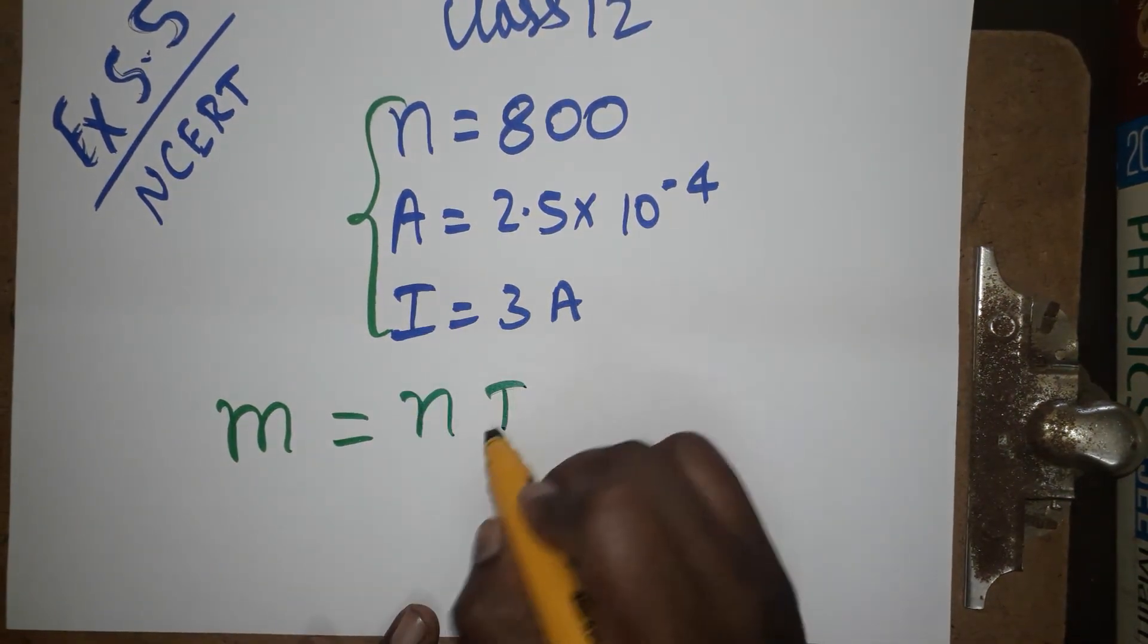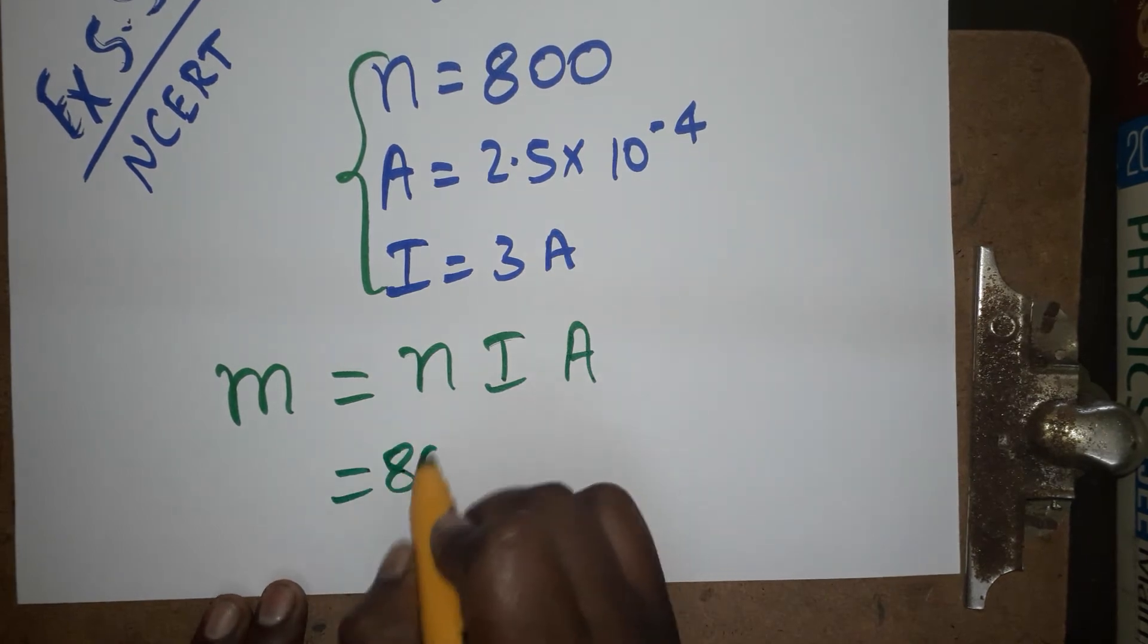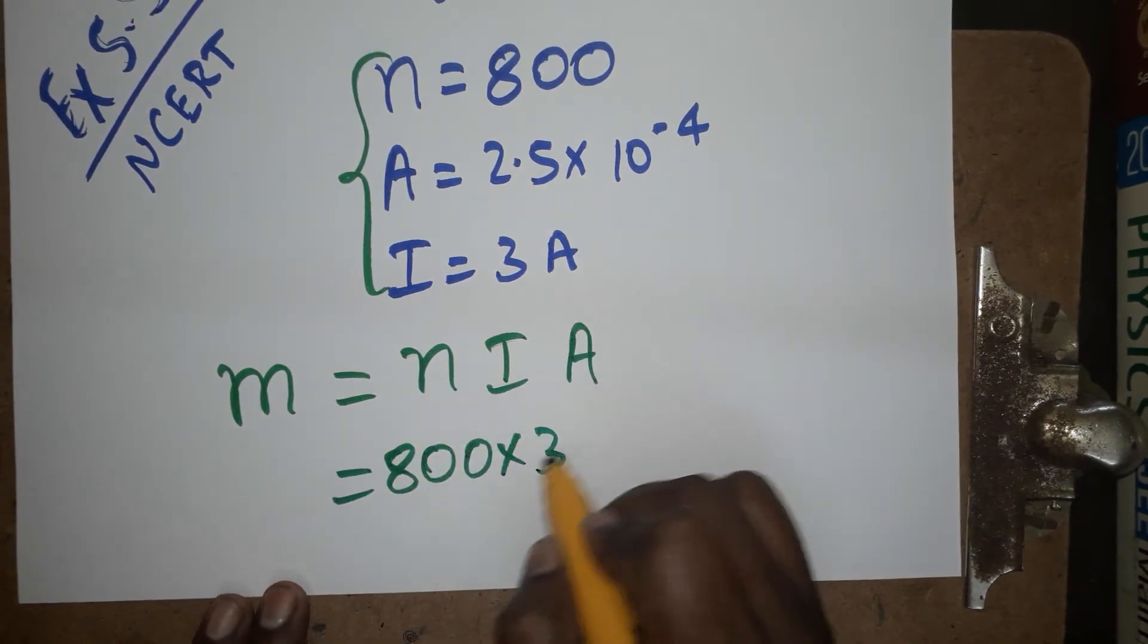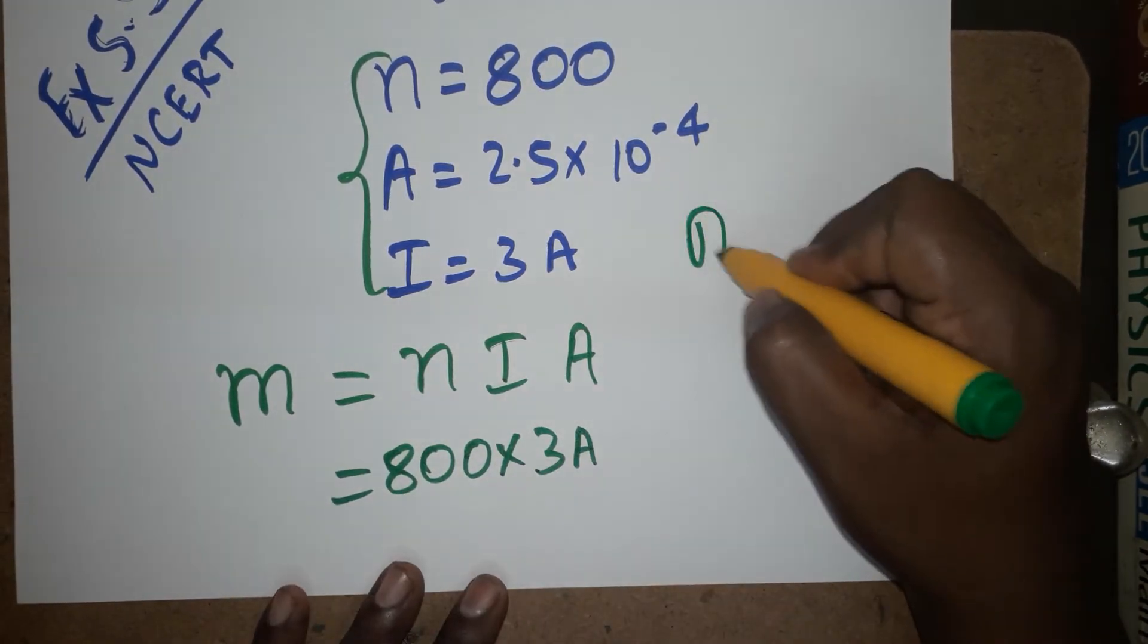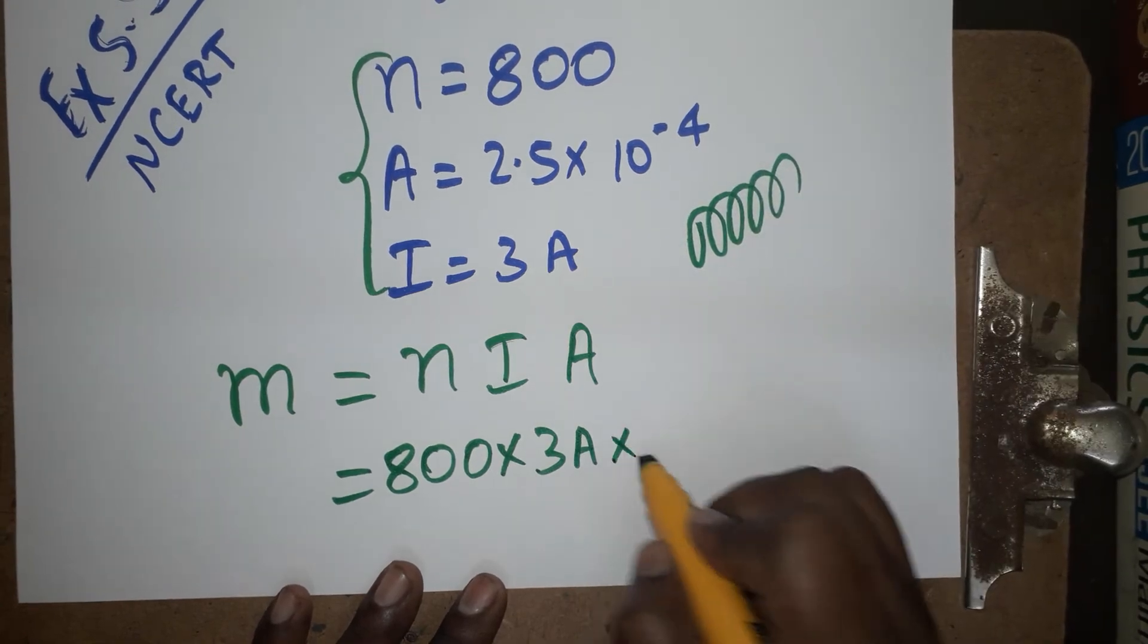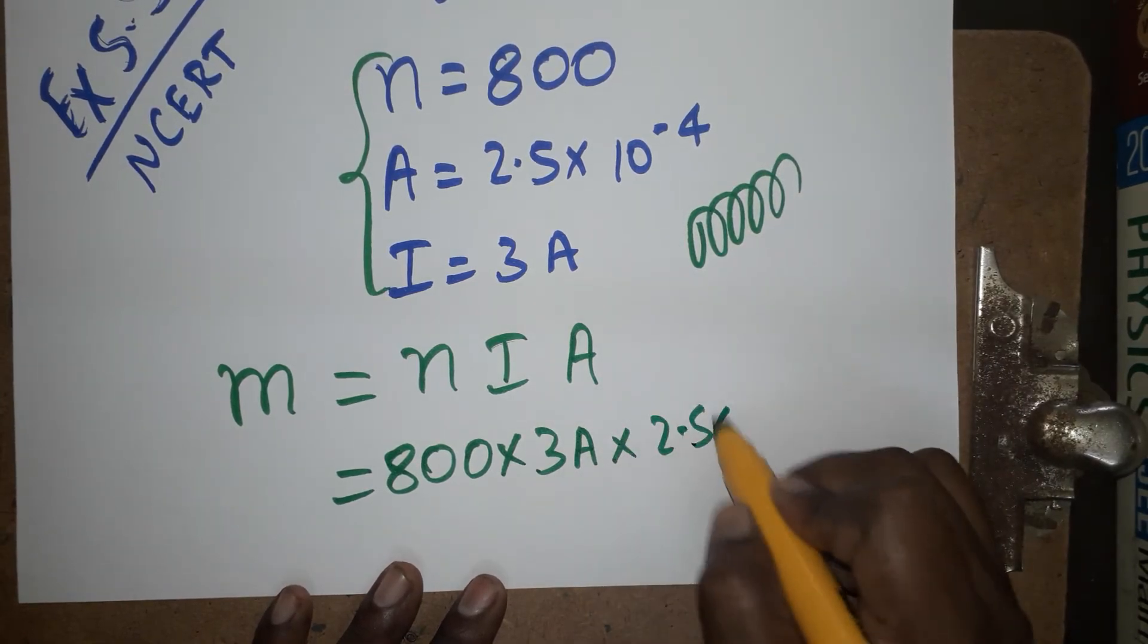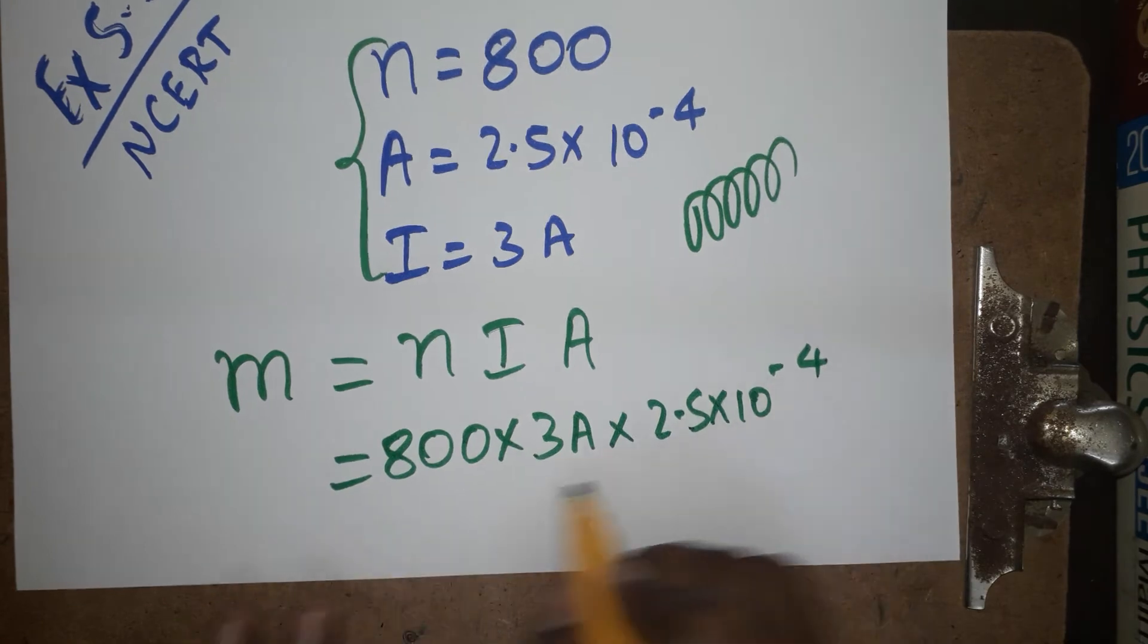It's actually a solenoid coil. Current is flowing as 3 ampere. The area of the solenoid coil is 2.5 into 10 power minus 4. If you are doing this multiplication, we will get directly the answer. So magnetic moment is 0.6.